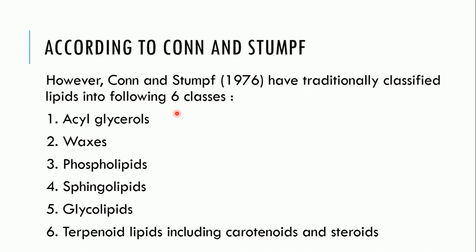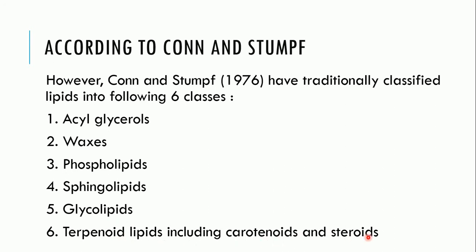According to Kahn and Stumpf in 1976, lipids have been traditionally classified into six classes: acylglycerols, waxes, phospholipids, sphingolipids, glycolipids, and terpenoid lipids including carotenoids and steroids.